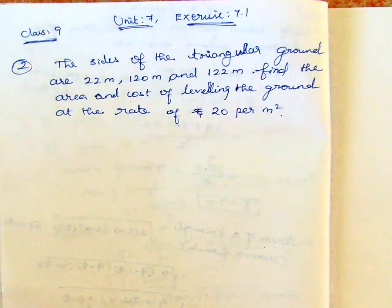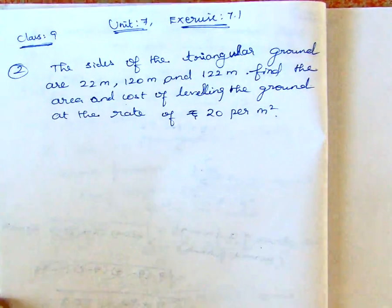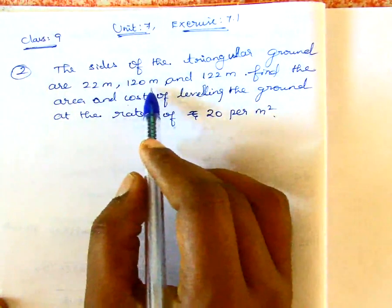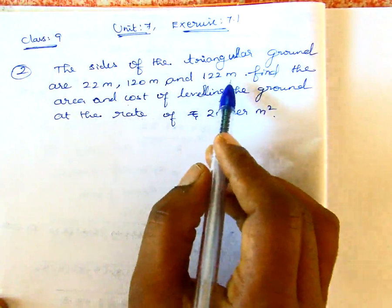Class 9, Unit 7, Exercise 7.1 Q2. The size of the triangular ground are 22 meter, 120 meter and 122 meter.